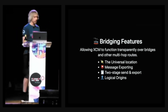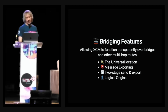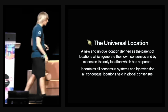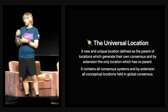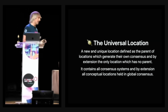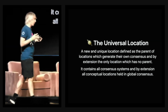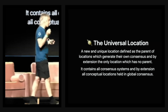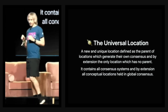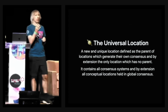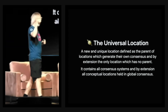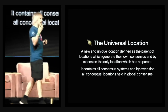It becomes difficult if we have to jump over into another ecosystem where there isn't really a way to make that reference relative. One of the conceptual additions in XCM v3 is the universal location — a consensus location defined as being the parent of all locations that are themselves providing global consensus. This gives consensus systems a common point of reference.